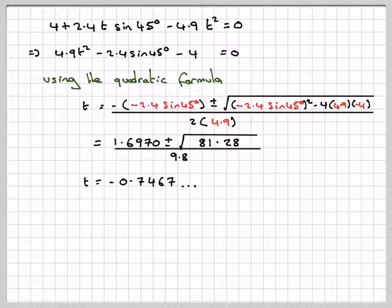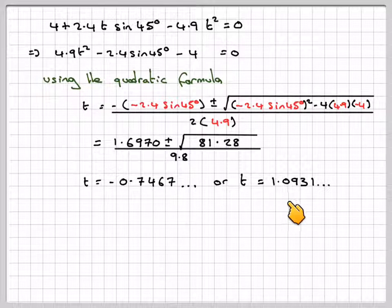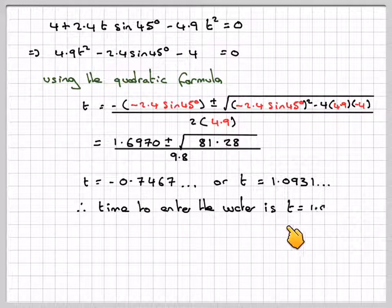So t will equal minus 0.7467. Now that doesn't happen, but that happens because the graph, if you move the graph backwards, because it started at 4, it will come down on the negative axis. So t will equal 1.0934. Therefore, the time to enter the water will be that one, 1.09 seconds.